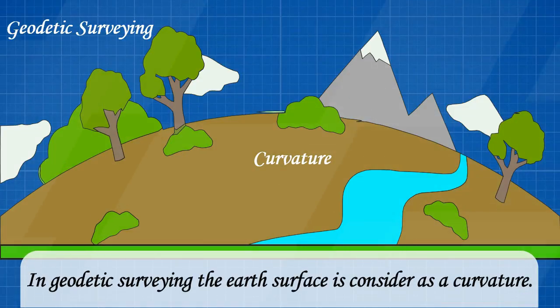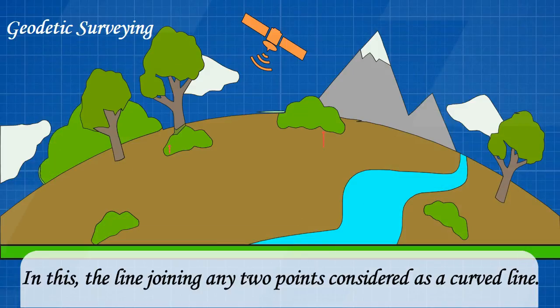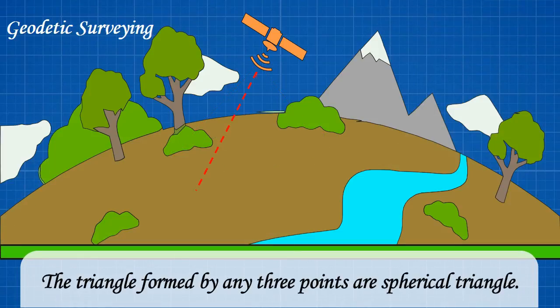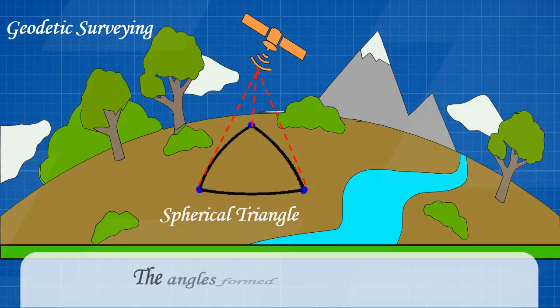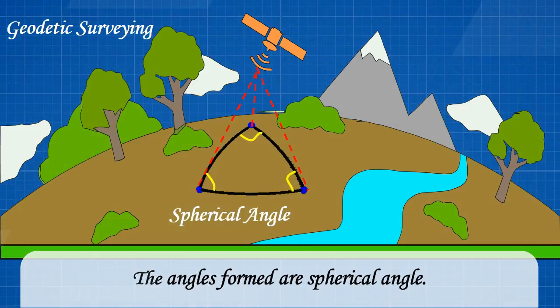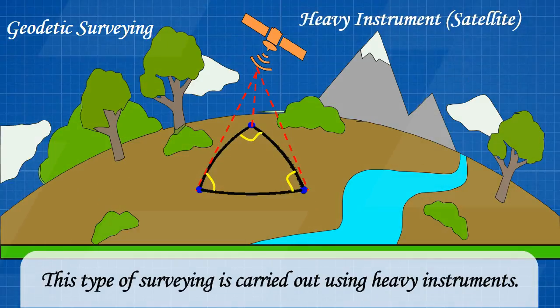In geodetic surveying, the earth surface is considered as a curvature. The line joining any two points is considered as a curved line. The triangle formed by any three points is a spherical triangle, and the angles formed are spherical angles.